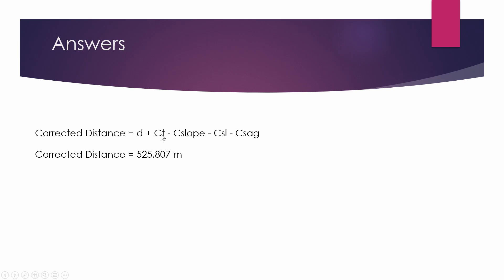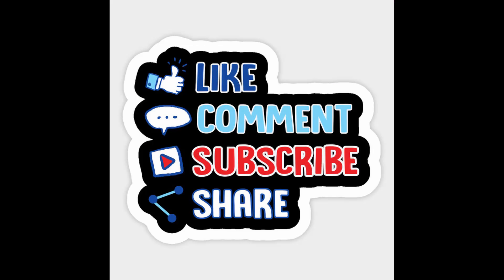In the end, we have to take our distance, which is the 526.471. We add our correction of temperature, minus the slope, minus the correction of height of sea level, and then also minus our sag, and we'll get a total corrected distance. And that is our answer rounded off to the third decimal. Thank you very much. I hope this video helped you quite a bit. See you next video.